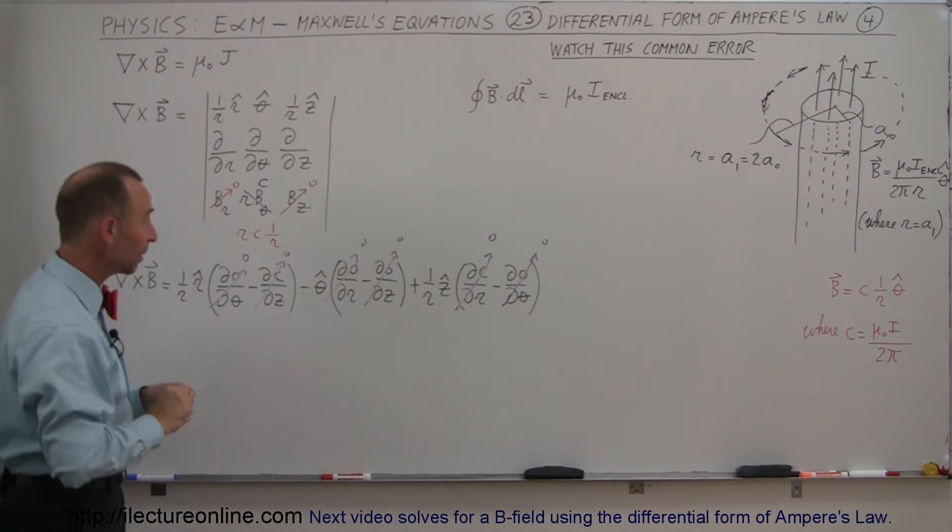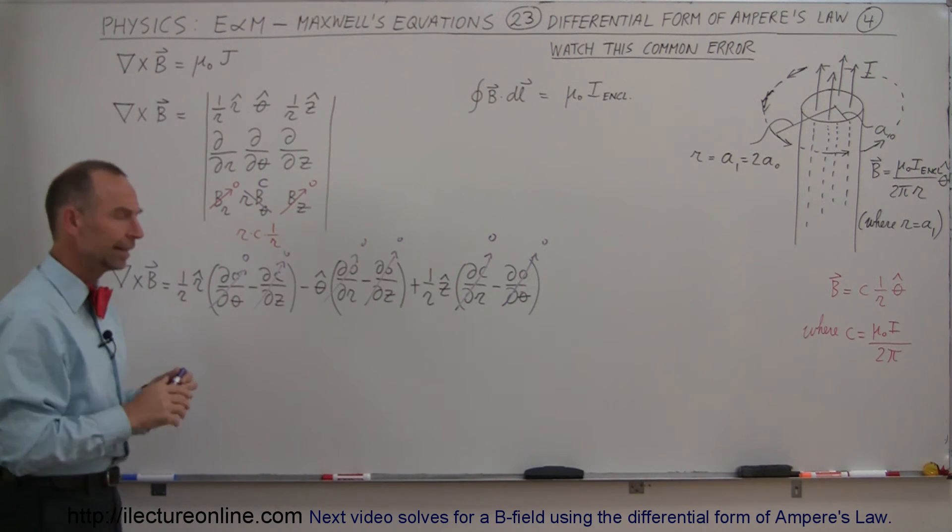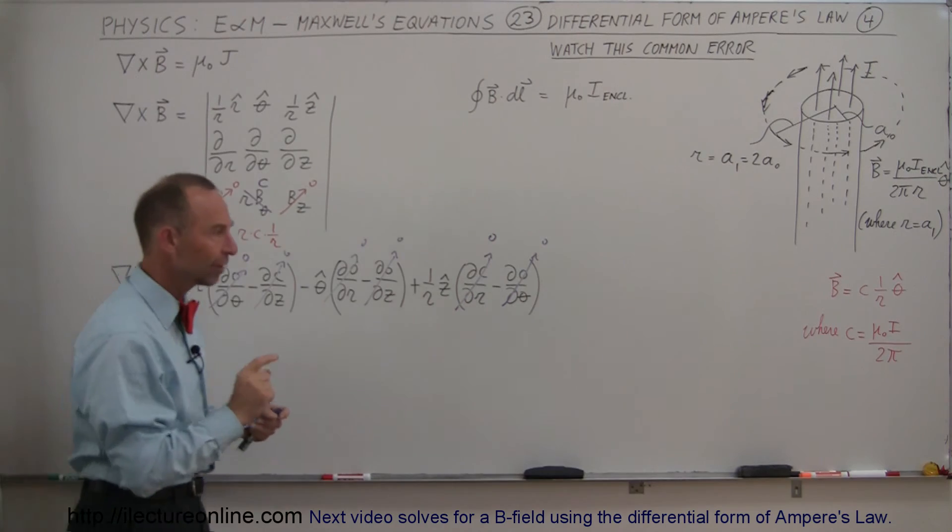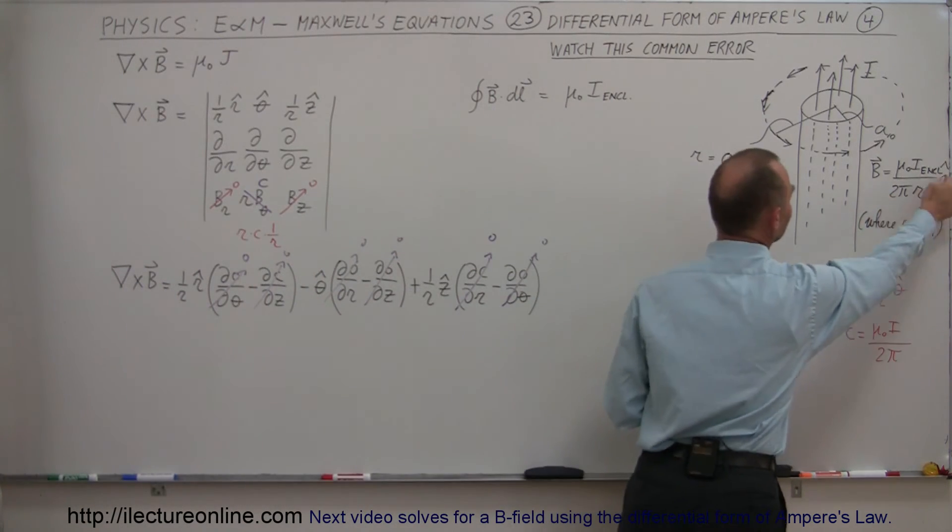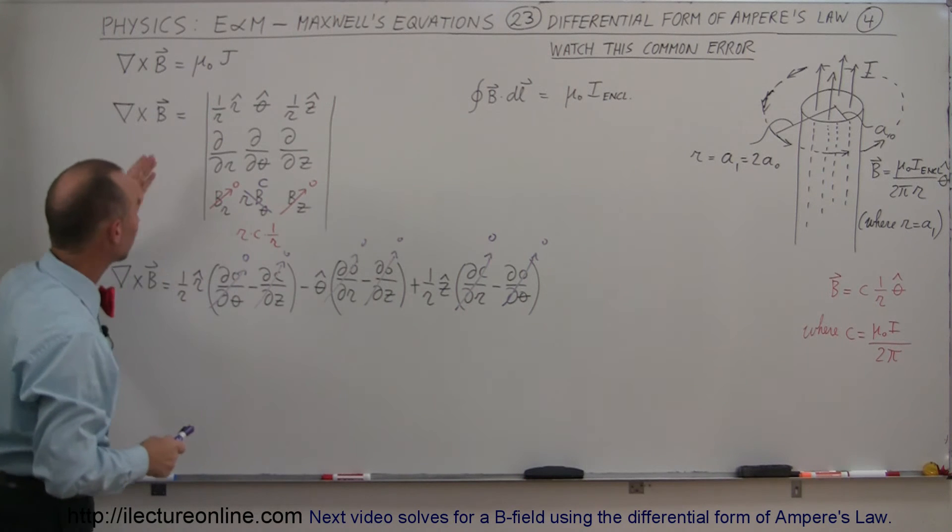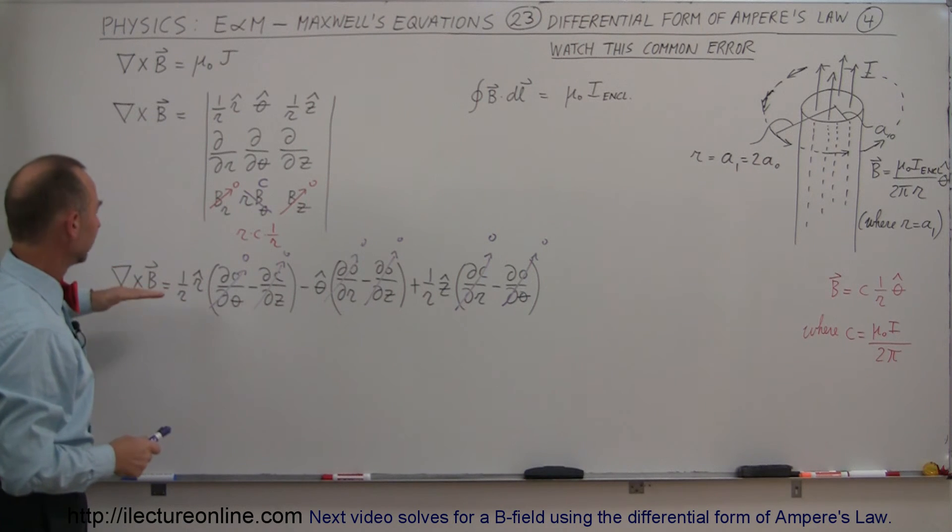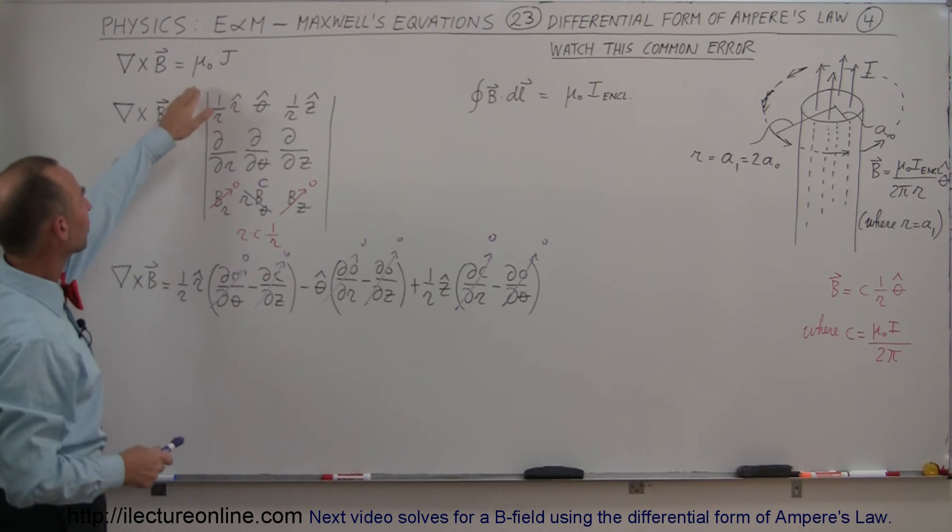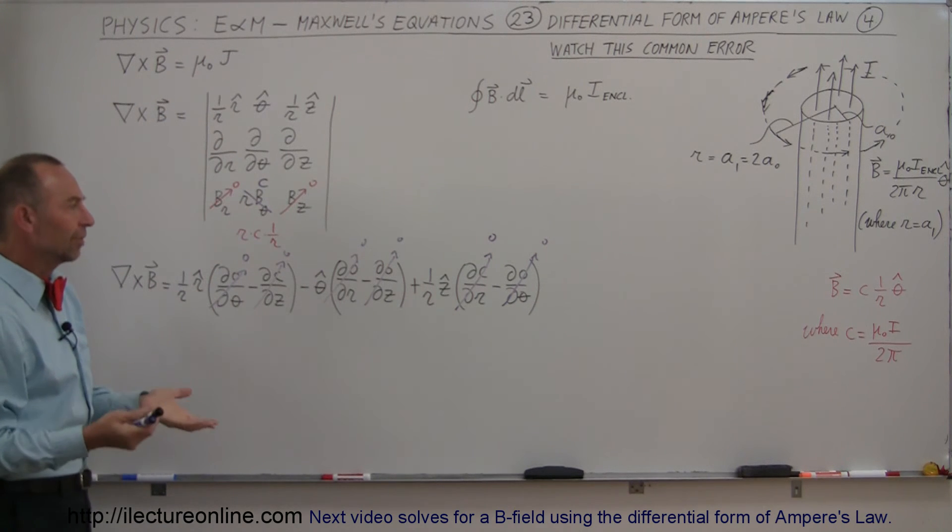And also what we find is that we take the curl of B and we get 0. Hmm, that's not at all what we'd expect, because we expect to get a result that looks like this. So why don't we get μ₀ times the current density inside? We simply get 0.